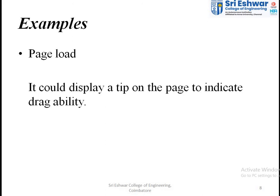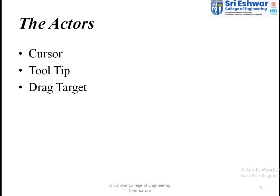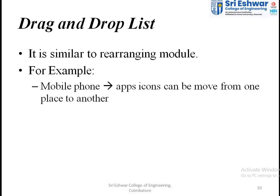For example, when closing a web page, a prompt may appear asking whether you are willing to leave the page — that kind of interaction comes under drag and drop. Actors in drag and drop are the different tools used: the first is a cursor, the second is a tooltip, and the third is a drag target. These are the three actors used under drag and drop menus.